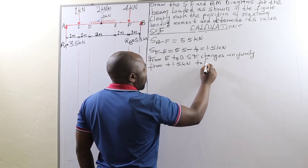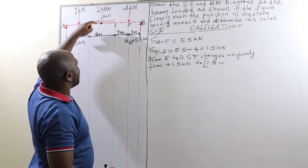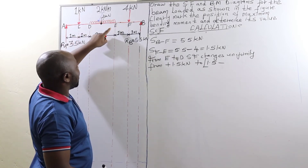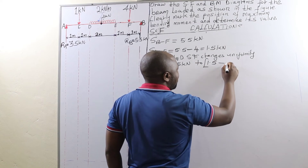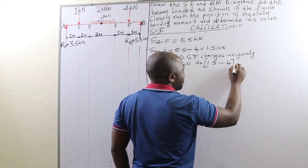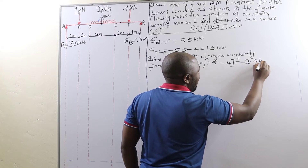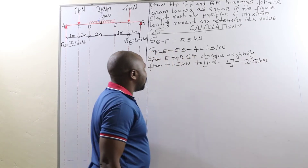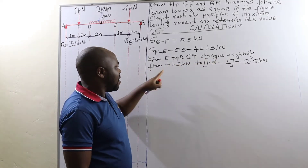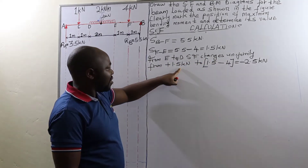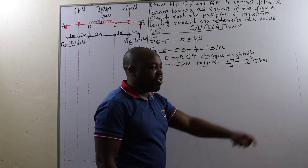We take this 1.5 kilonewtons and subtract the 4 kilonewtons acting at the center of E and D. That will be 1.5 minus 4 kilonewtons, which gives us negative 2.5 kilonewtons. Therefore, from E to D, shear force will change uniformly from positive 1.5 kilonewtons to negative 2.5 kilonewtons.